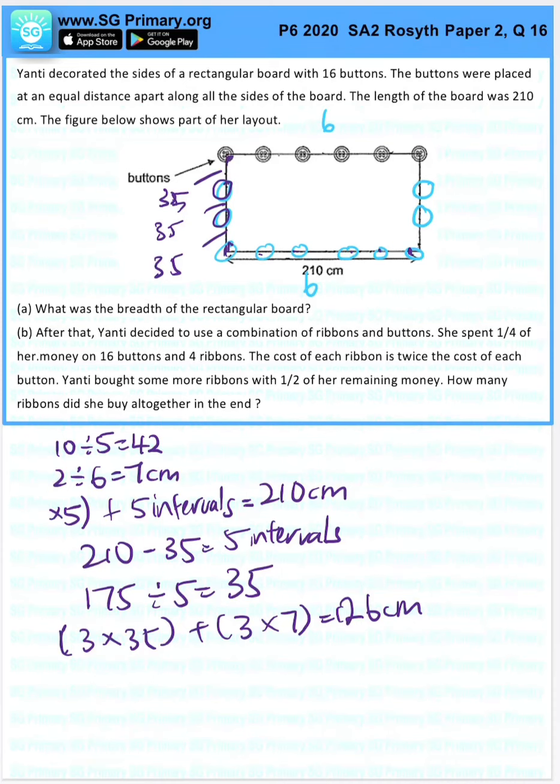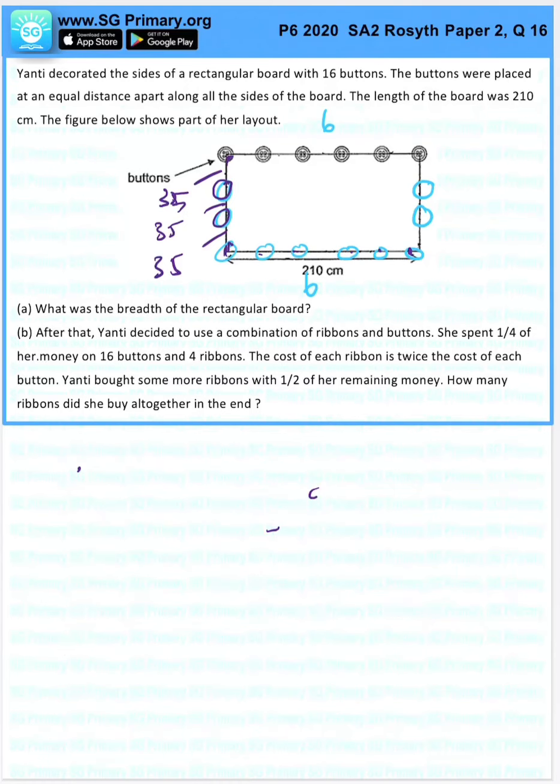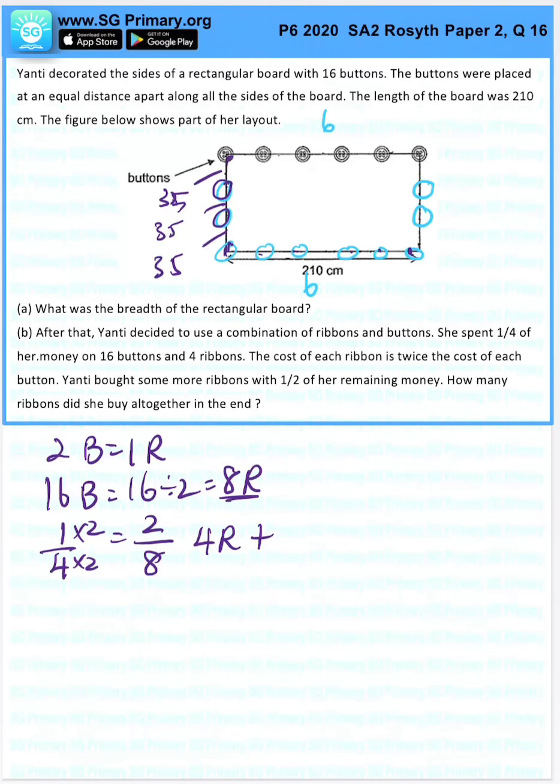Now we can do B. We know that 2 buttons equals 1 ribbon, which means 16 buttons is 16 divided by 2, which is 8 ribbons. So 1 quarter times 2, that's 2 over 8, can buy 4 ribbons plus 8 ribbons, which is 12 ribbons.